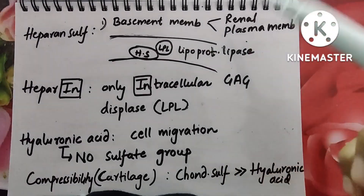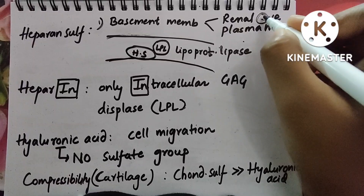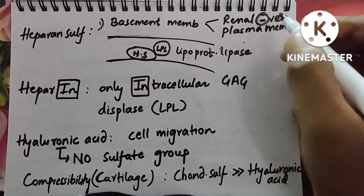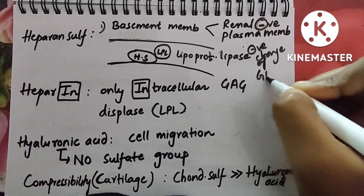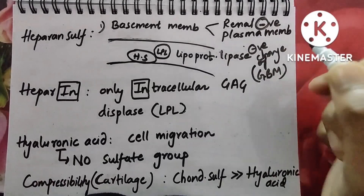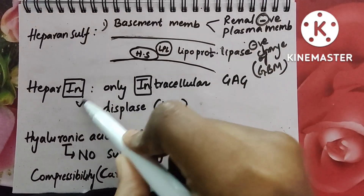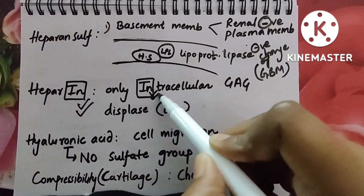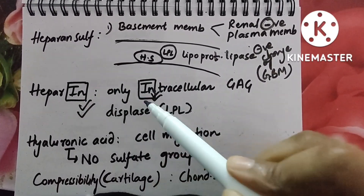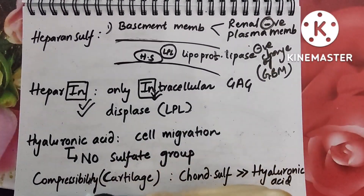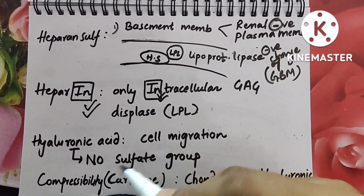Heparan sulfate is present on the plasma membrane and on the endothelium; it attaches to lipoprotein lipase. Heparan sulfate gives a negative charge to the renal glomerular basement membrane, which is responsible for charge repelling — so filtration of albumin is decreased because it repels albumin, which is negatively charged. Heparin has iron in it, so it is the only intracellular GAG. Heparan sulfate holds LPL, whereas heparin displaces LPL.